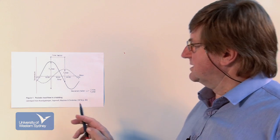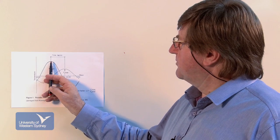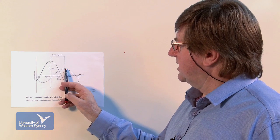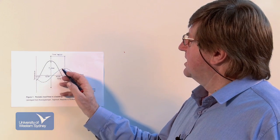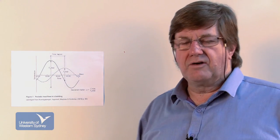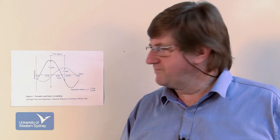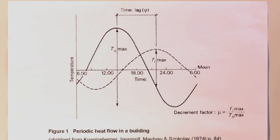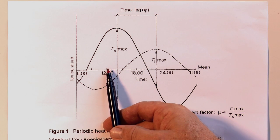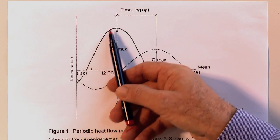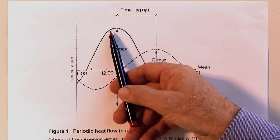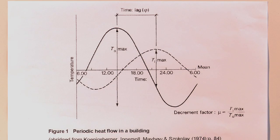How long does the heat take to travel from the outside to the inside? On this dashed line we have the internal air temperature on the internal skin of that composition wall. In the middle of the day, the outside air temperature is rising — here we have 12 o'clock. The outside temperature on the brick wall might not reach its peak till say 2 o'clock in the afternoon.